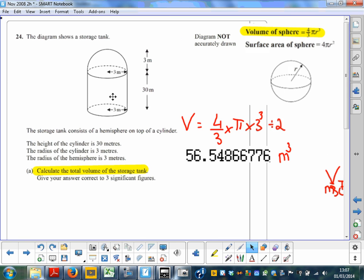Now the volume of the cylinder is quite simple, it's a prism. The formula is the area of the cross-section times the length. The cross-section is just a circle, so π times r squared. That's π times 3 squared times the length, which is 30.